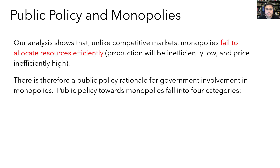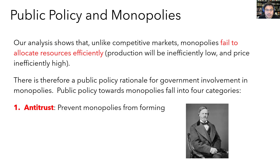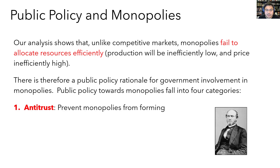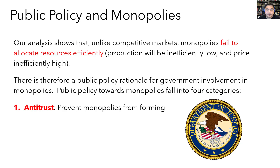In practice, American public policy towards monopolies falls into four categories. First, there's what's called antitrust — the broad umbrella of policies that try to prevent monopolies from forming in the first place, or breaking up monopolies that are shown to be harmful to consumers. The legal basis for these policies is the Sherman Antitrust Act of 1890 and the Clayton Antitrust Act of 1914. Administration of antitrust policy is primarily led by the Department of Justice.